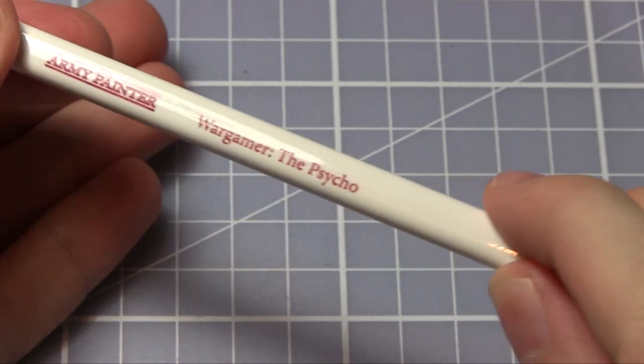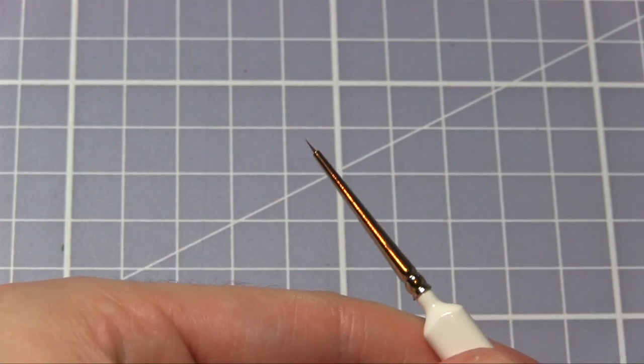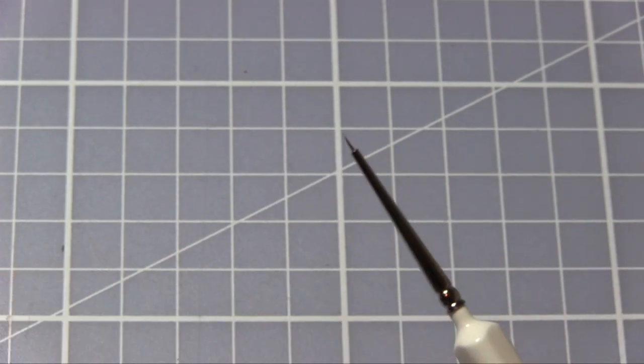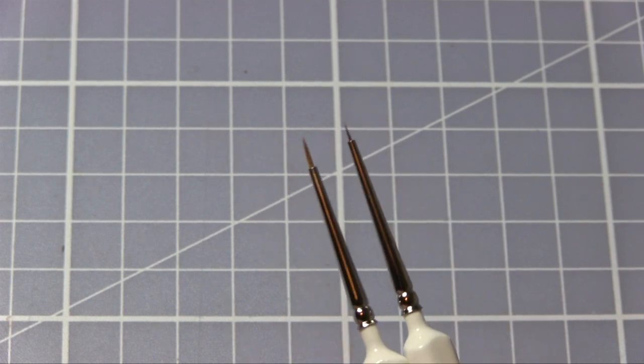You may be thinking that is as far as someone can go with the size of a paintbrush, but you'd be wrong because the Army Painter have created the Psycho Brush. If you look at the bristles here, you can see it's pretty much about five bristles just grouped together there. If we compare it to the insane detail, you can see just how small they are.